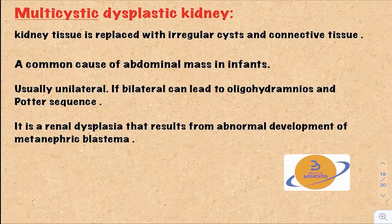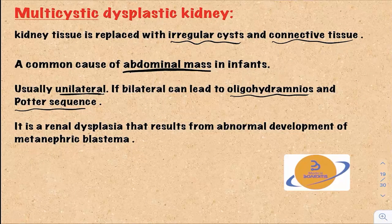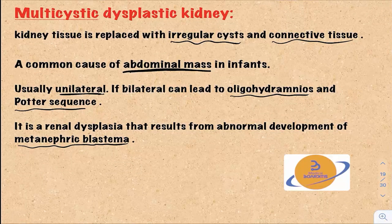The next abnormality is called multicystic dysplastic kidney. In this condition, the kidney tissue is replaced with irregular cysts and connective tissue. This is a common cause of abdominal mass in infants and is usually unilateral. If bilateral, it can lead to oligohydramnios and Potter sequence. It is a renal dysplasia that results from abnormal development of the metanephric blastema, which develops into irregular cysts and non-functional connective tissue, leading to kidney maldevelopment.